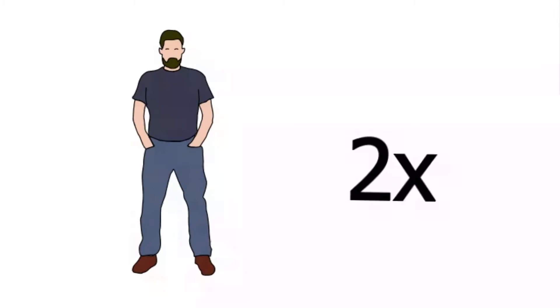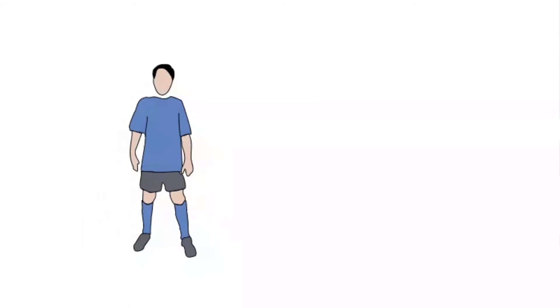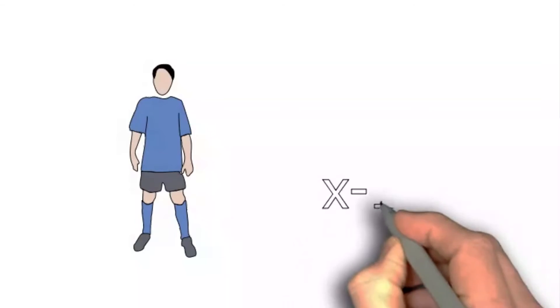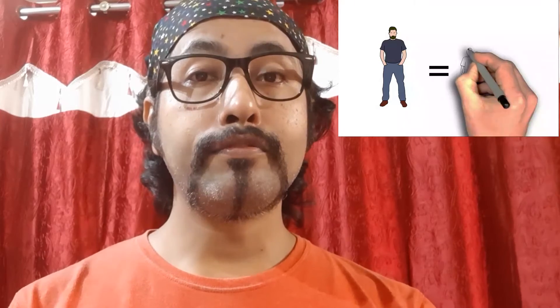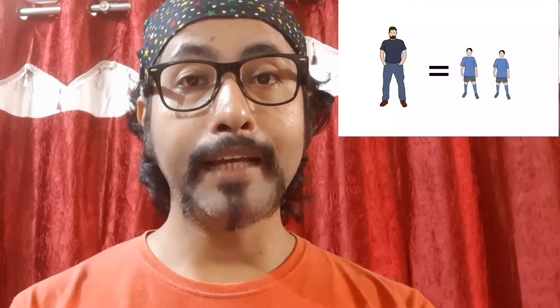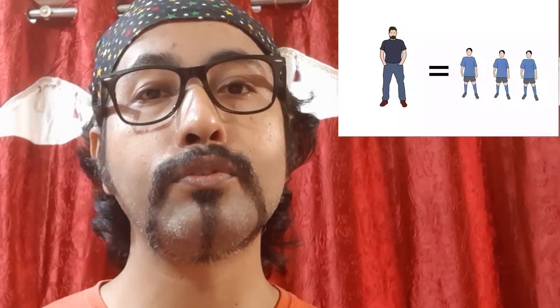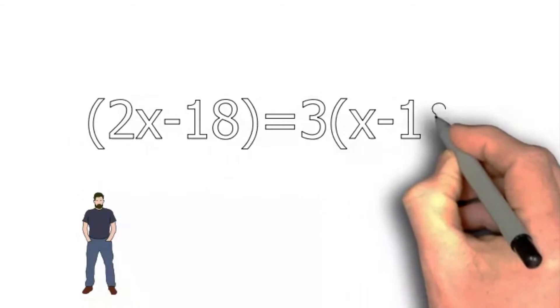Presently, father's age is 2x and son's age is x, because it is double — 2x and x. Before 18 years, the son was x minus 18 and the father was 2x minus 18. At that point, the father's age was three times his son's age, so: 2x minus 18 equals 3 into (x minus 18).